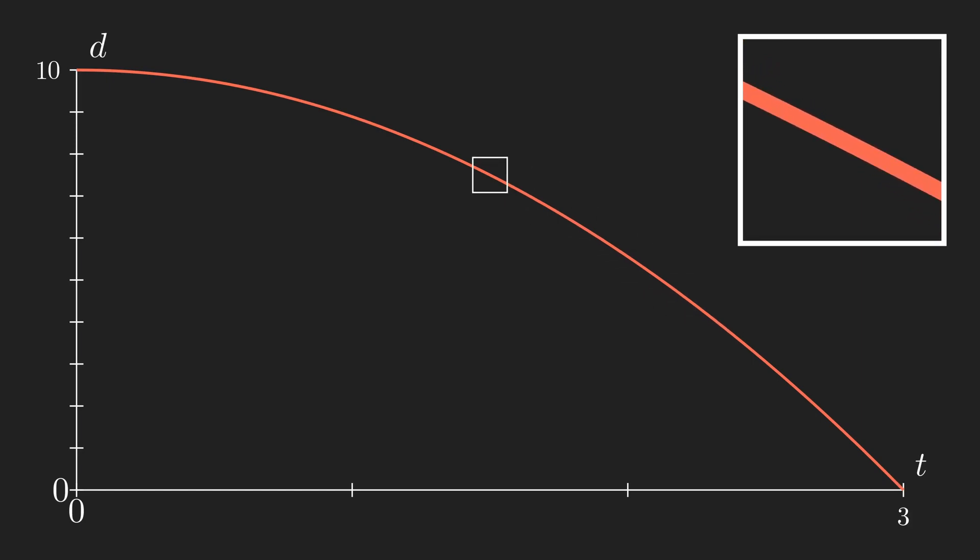From this, let's consider what happens if we move the two points we put into our velocity equation closer together. You can see that as the points get closer, they become a better and better approximation of the speed of our curve at any given point.